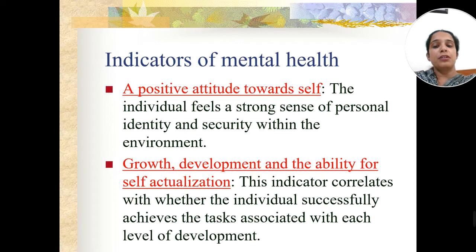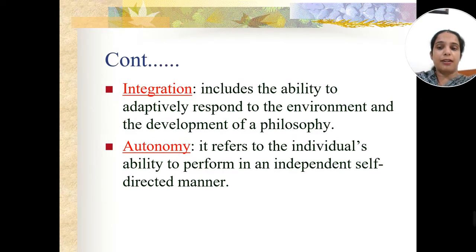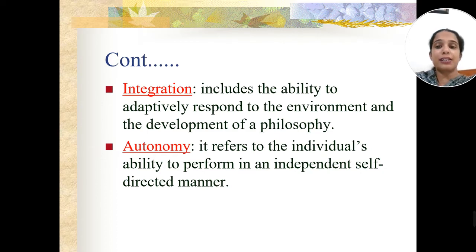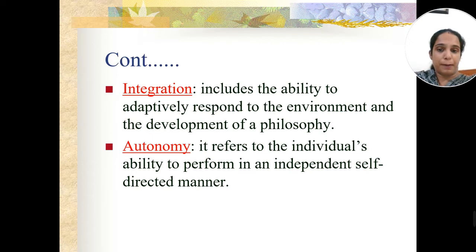The person must achieve their tasks properly according to growth and developmental stages — that is the second indicator of mental health. The third indicator is integration, which includes the ability to adaptively respond to the environment and development of a philosophy of life. The person must be able to adjust in a new environment — for example, after plus two joining a professional course where the environment is totally changed — and develop their philosophy of life, meaning their goals and aims.